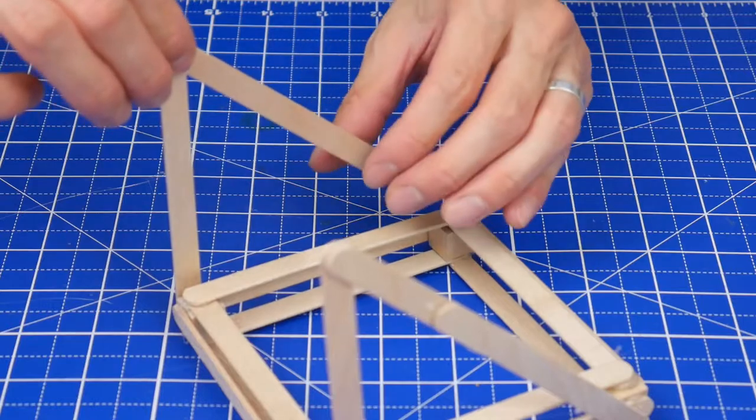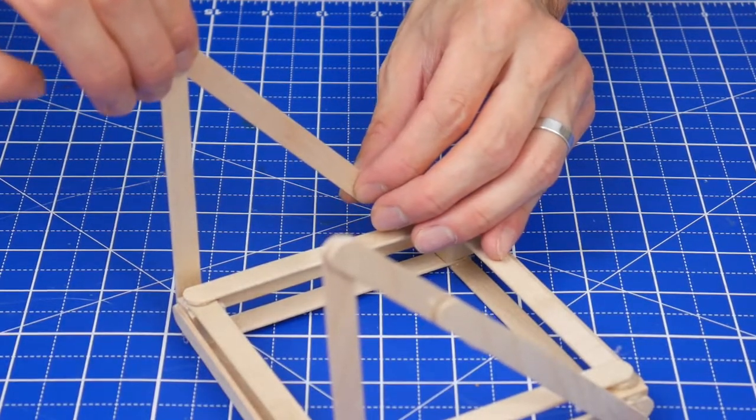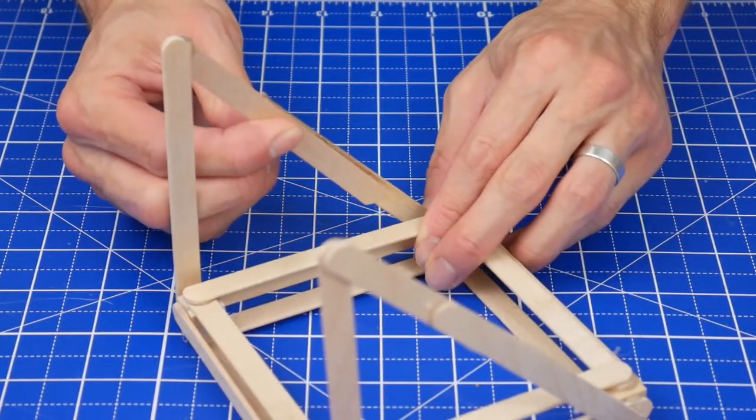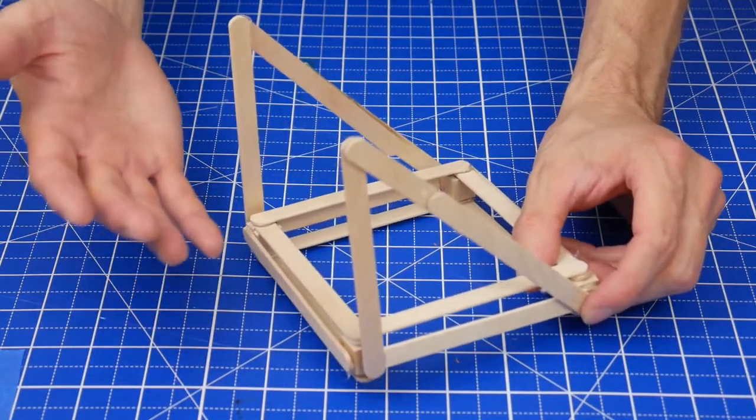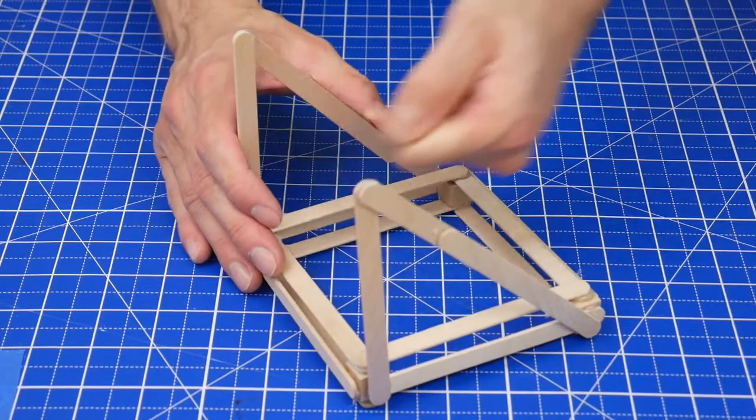Then from there glue two more sticks that connect the top of this one to the bottom corner of the base. These triangle side pieces are what are actually going to support the slingshot when it's being pulled back.